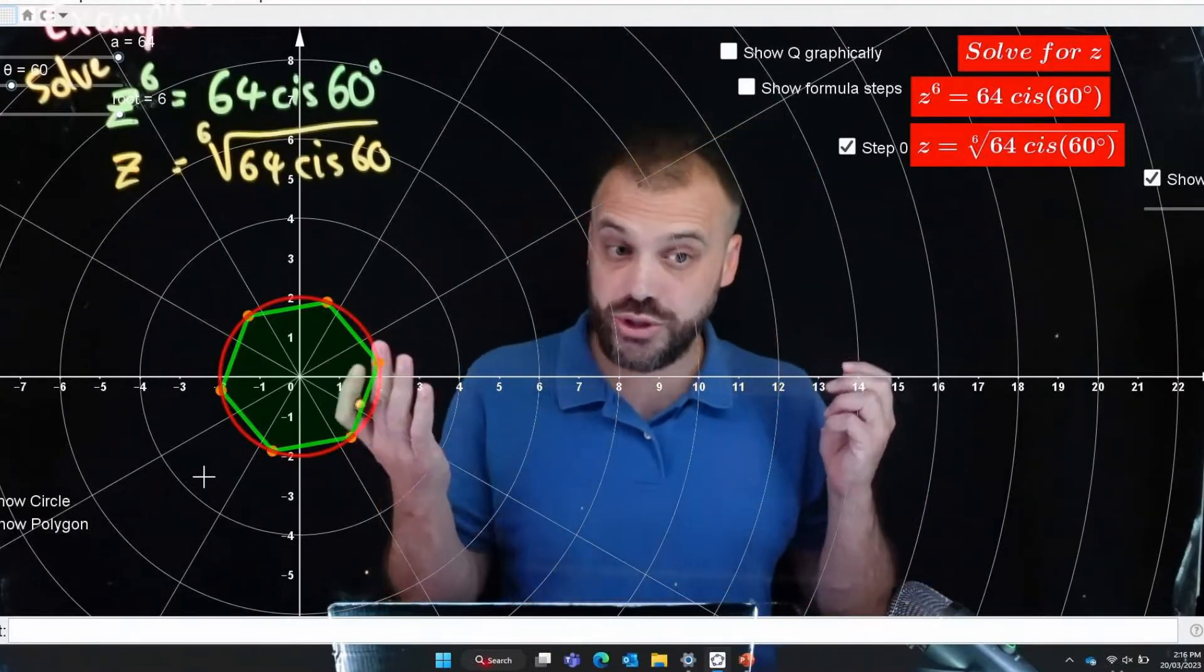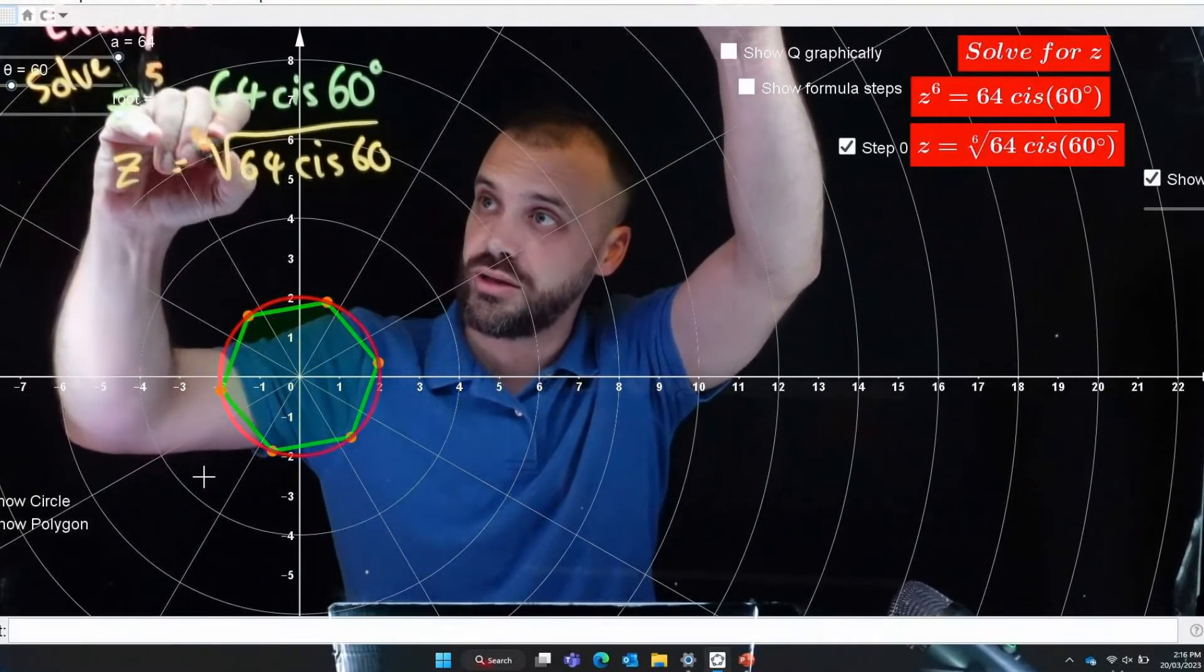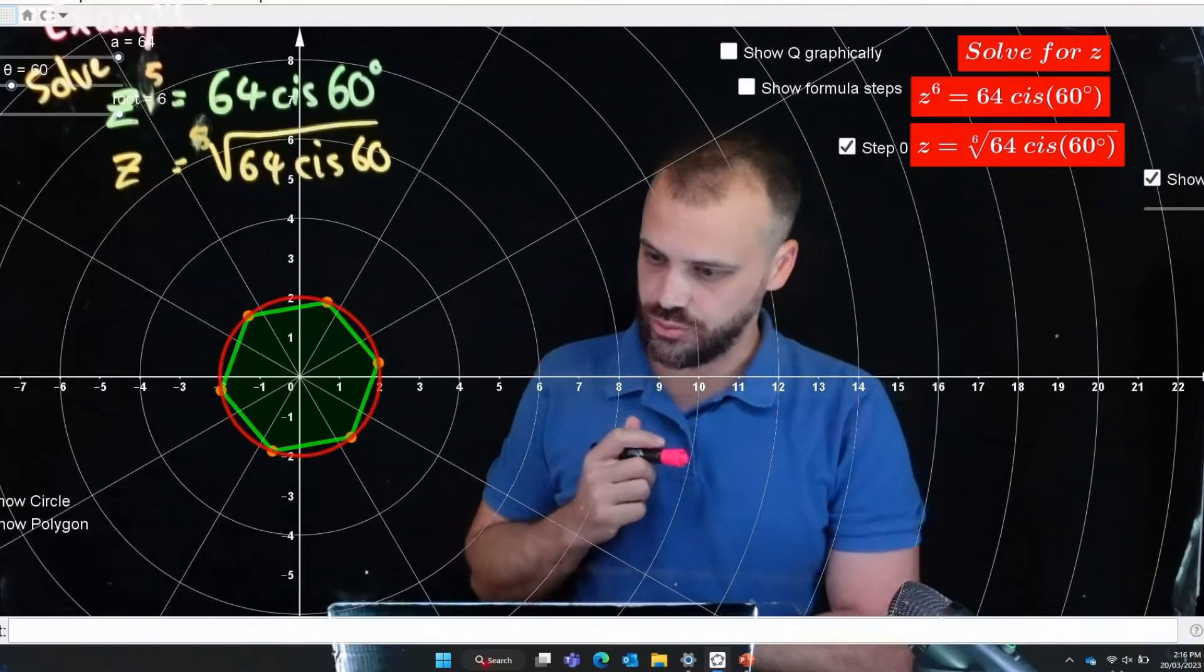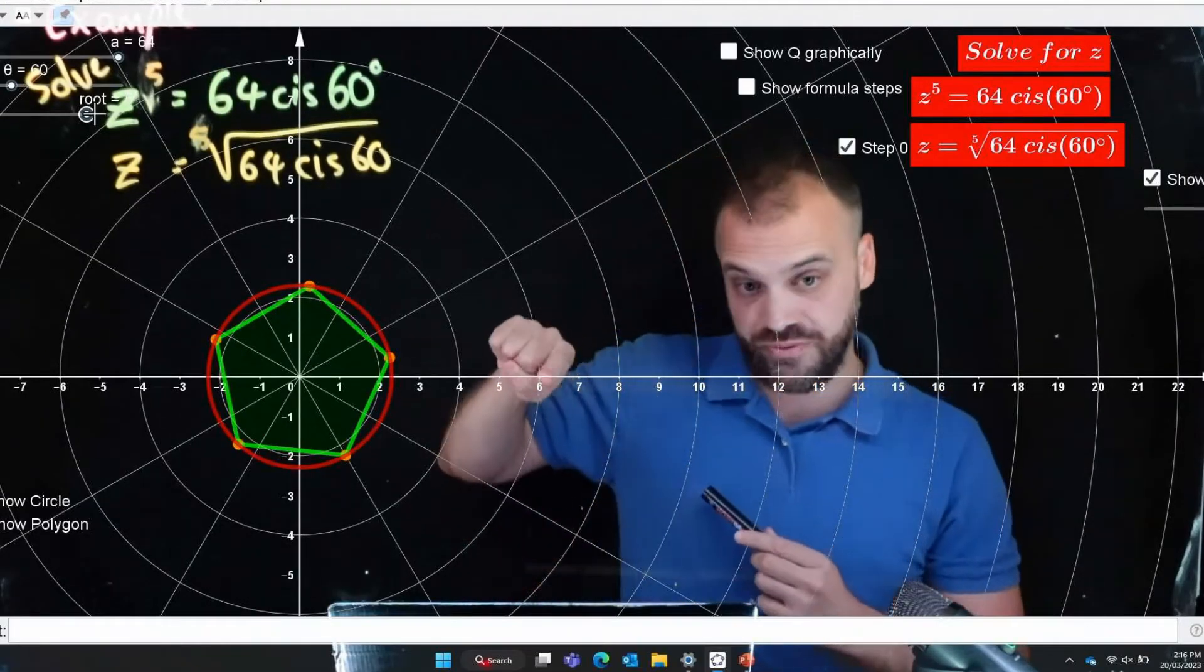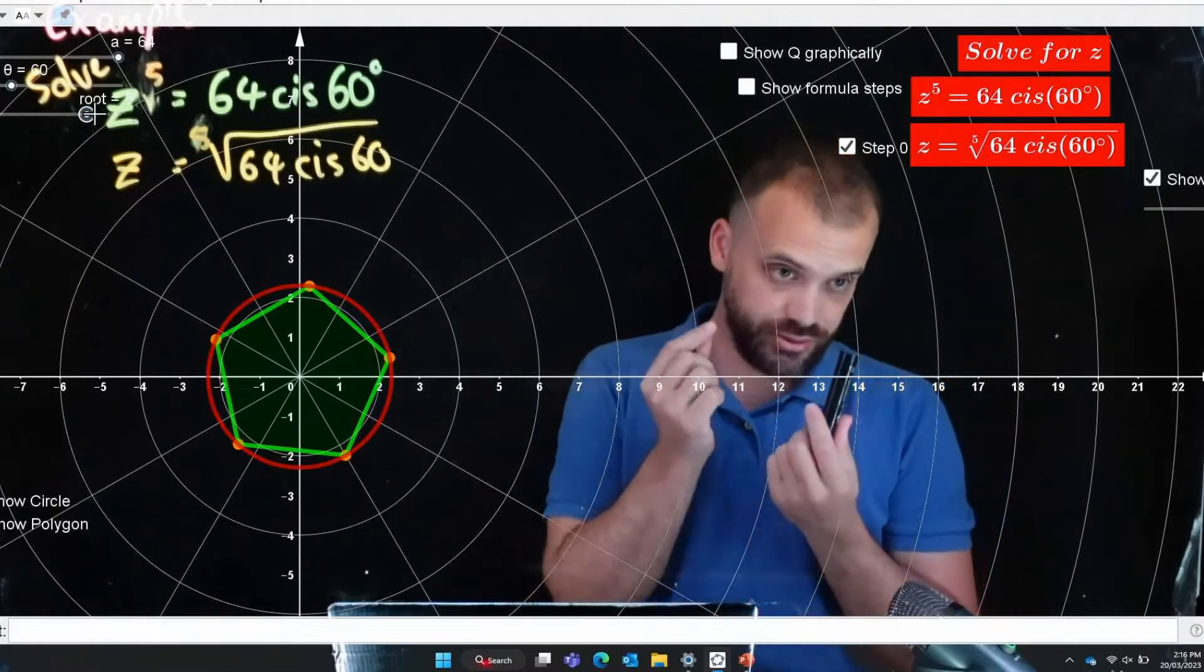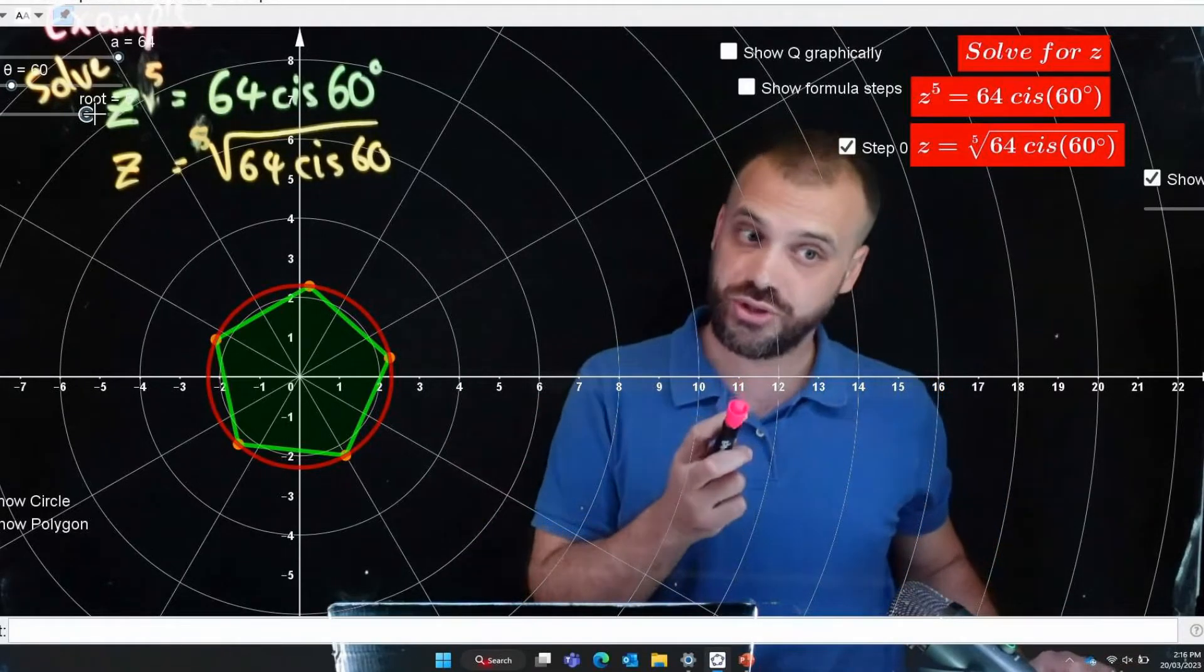If the question was different, let's say we were trying to solve this question here, then the answer would look different. It would be five equally spaced answers around the origin and we get a pentagon.